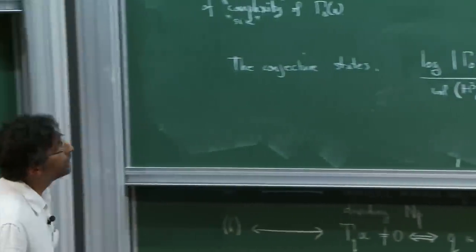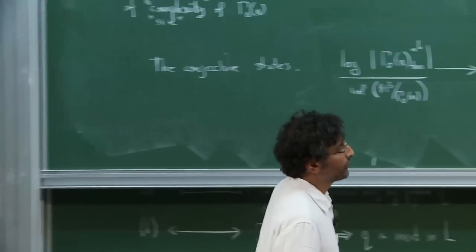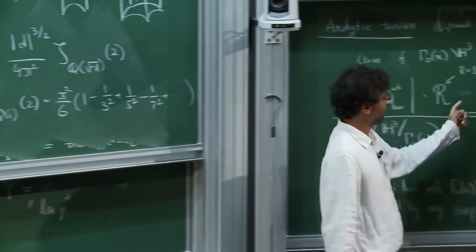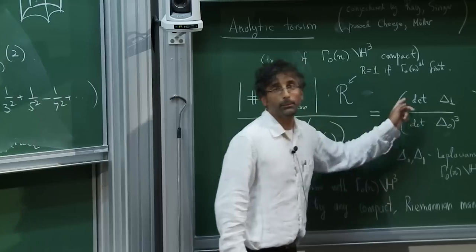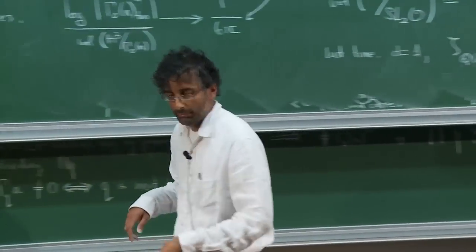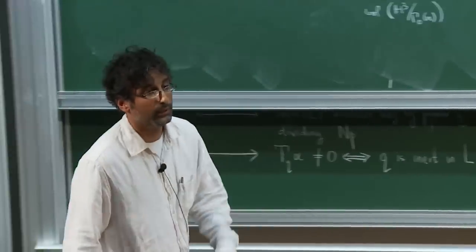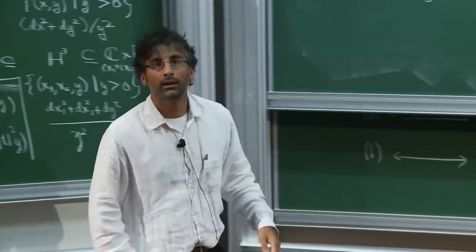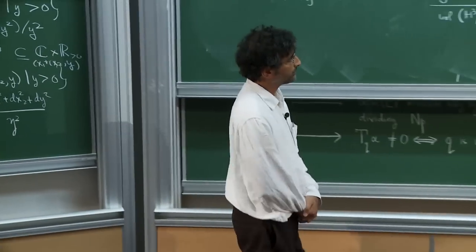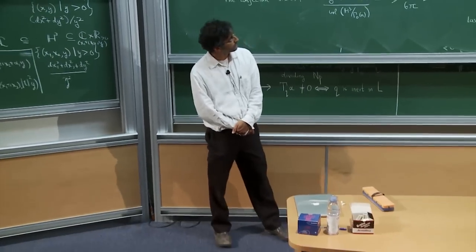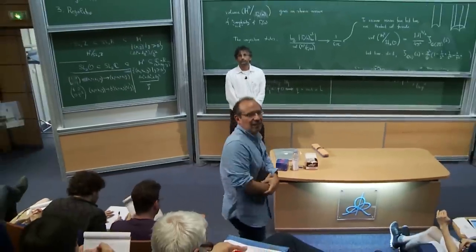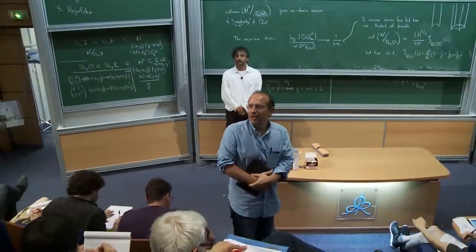So this constant which appeared last time really comes from the value of a zeta function of this quadratic field — it's really a measure of hyperbolic volume, nothing more. Maybe this is a good point to stop, and next time we will discuss what the other things in this formula mean, and a little bit about what we can do with it.